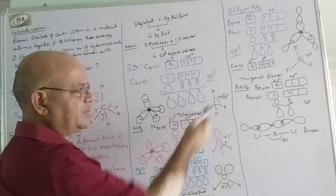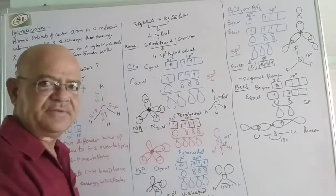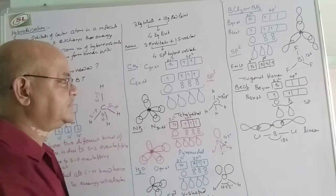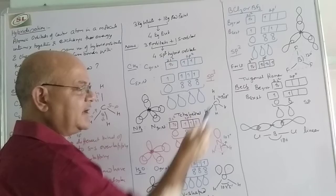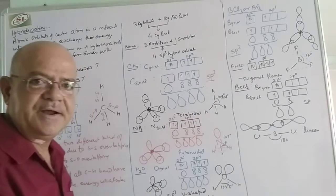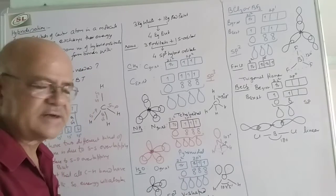This gives the tetrahedral geometry of methane, with a bond angle of 109° 28'.